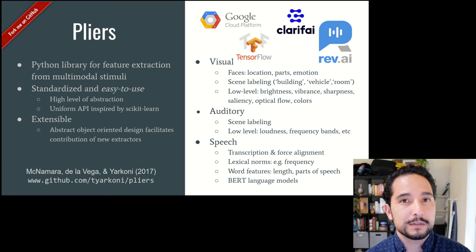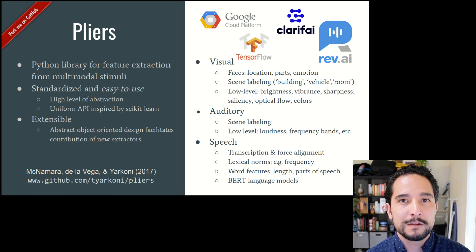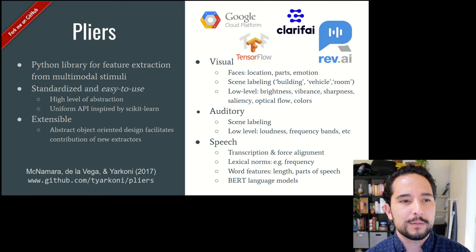Another highlight of pliers is that it's designed to be extensible — built from the ground up to make adding new extractors easy. This is really important because in machine learning research things are moving quickly, and every year there are new extractors that give us interesting features for naturalistic datasets. Pliers is designed so that new contributors can focus on implementing a specific extractor without needing to understand the entire codebase.